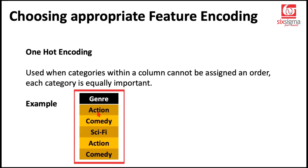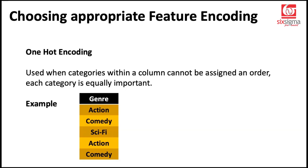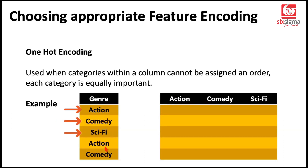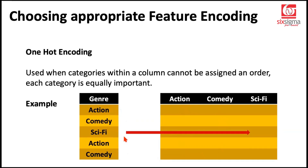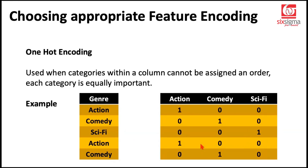So in a dataset, if one column talks about an individual's preferred genre — action, comedy, or sci-fi — since we cannot give an order, we give equal importance to each category. We create three new columns for the three categories. Wherever in our data we had action, the action column gets a one and the remaining places are filled as zero. Likewise for comedy and sci-fi. So eventually this is how your data looks. Notice that the sum of each row is one, since we just looked at one genre per viewer.